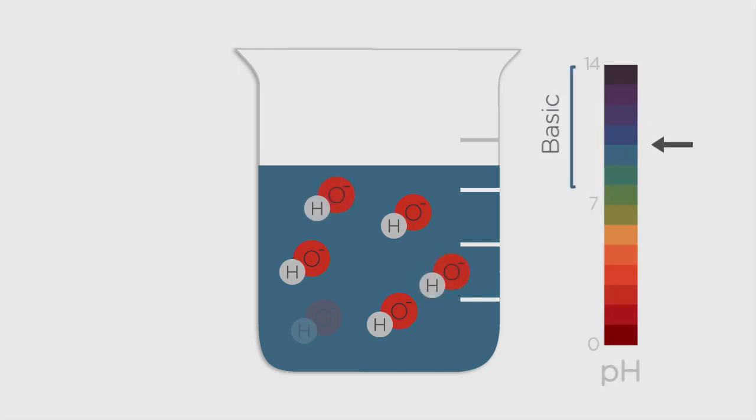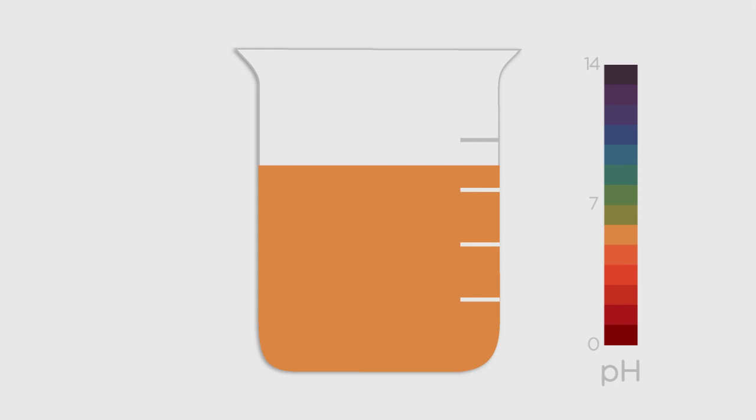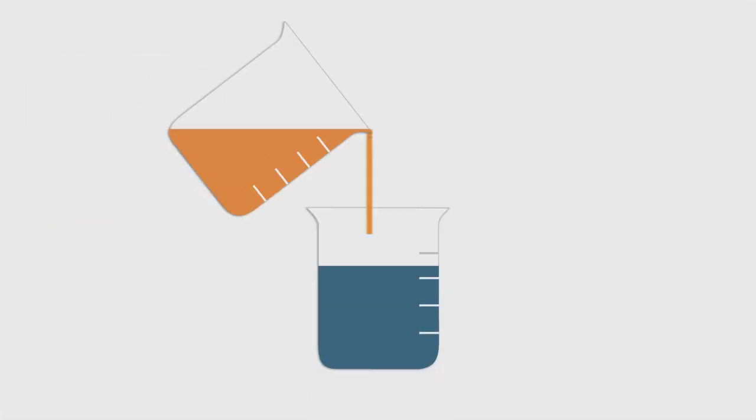Now imagine a second beaker, this one containing some hydrochloric acid. You might know from previous lessons that when a strong acid dissolves in water, its H plus cation and negative anion dissociate in a very similar way. So if we slowly add the acid to the alkali, all we're doing is creating an environment where the positive H plus ions can get together with the negative OH minus ions.